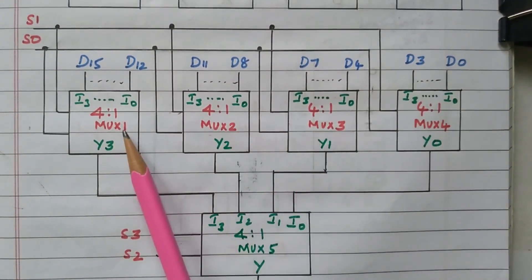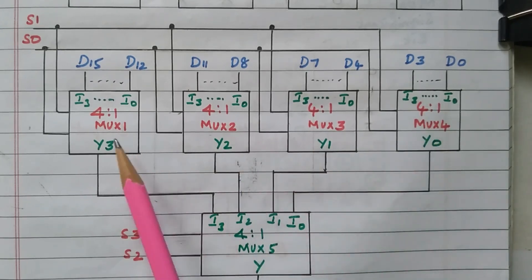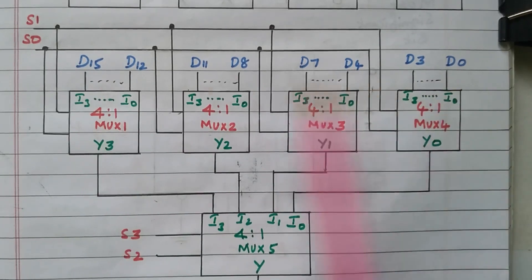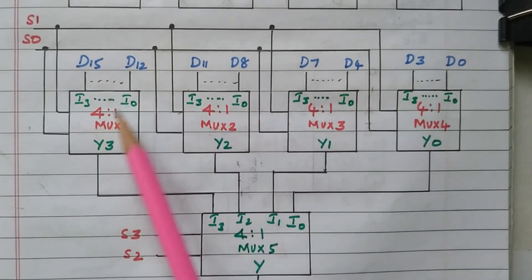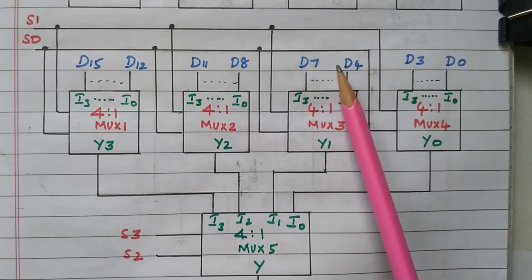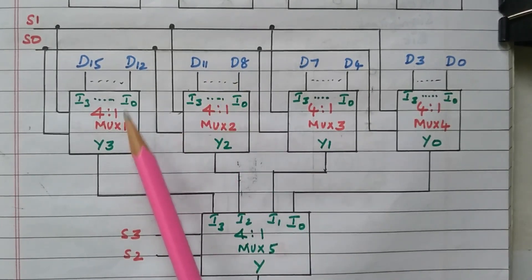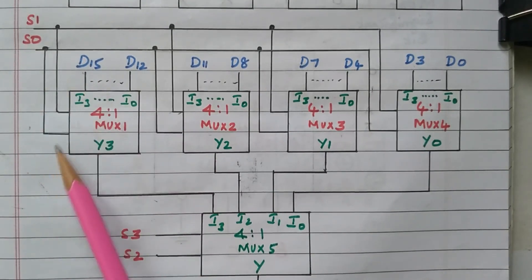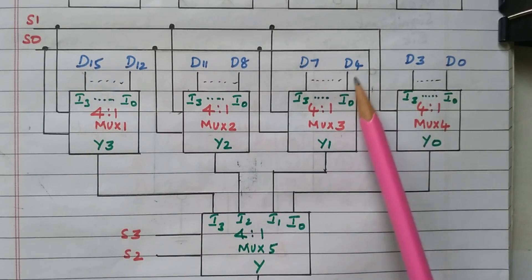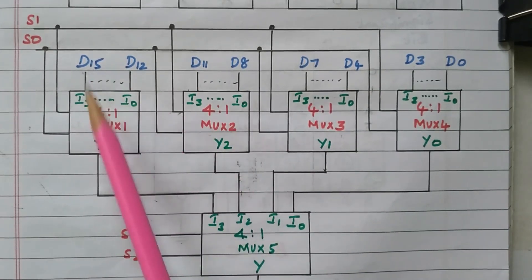In the logic diagram, there are 4 four-to-1 multiplexers. Multiplexer 4 has inputs D0, D1, D2, D3. Multiplexer 3 has D4, D5, D6, D7. Multiplexer 2 has D8, D9, D10, D11. Multiplexer 1 has D12, D13, D14, D15. So out of 16 data, four inputs are connected to each of the 4 multiplexers.